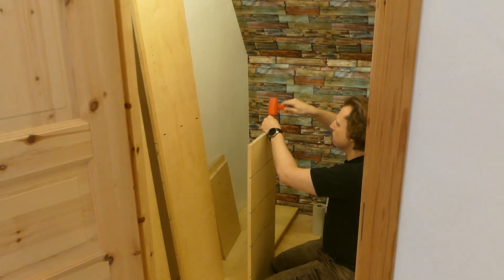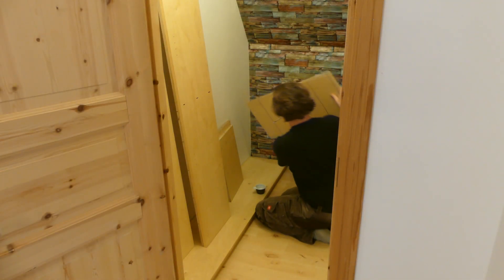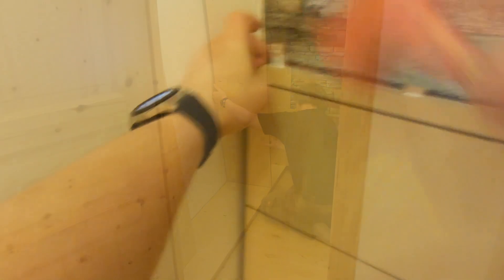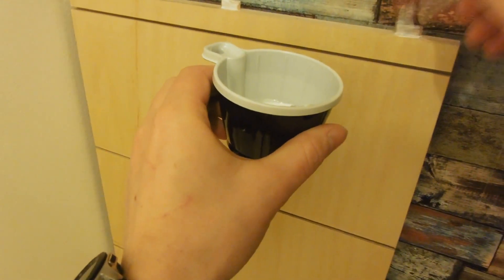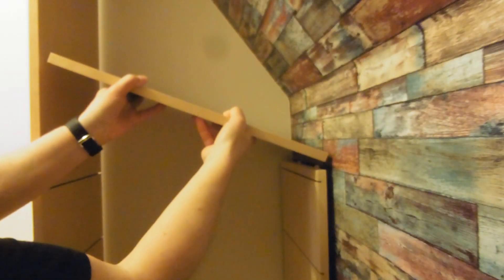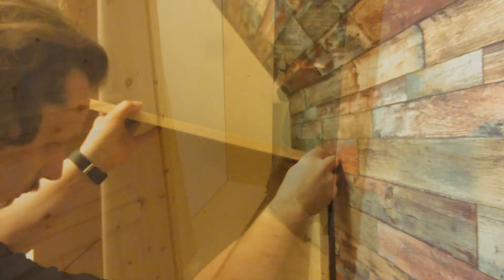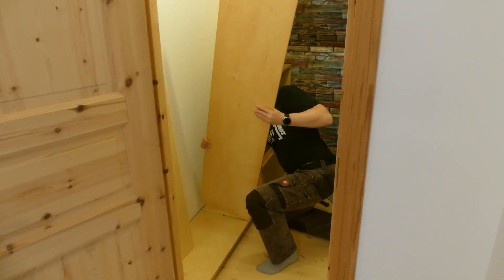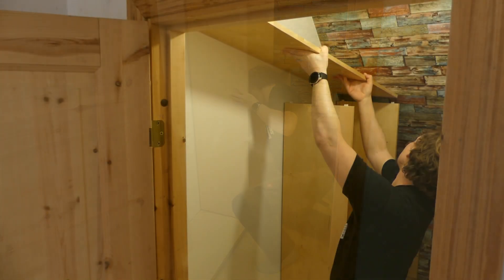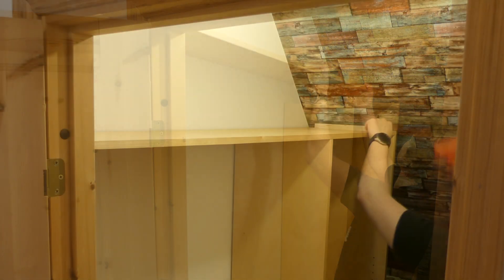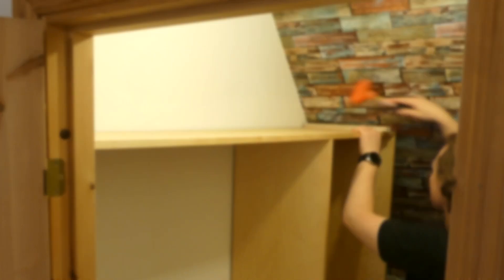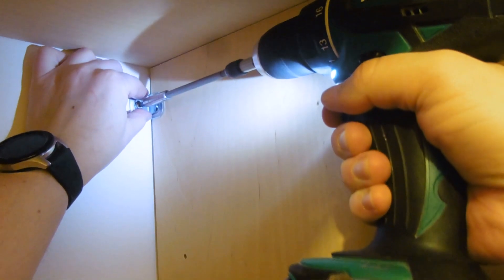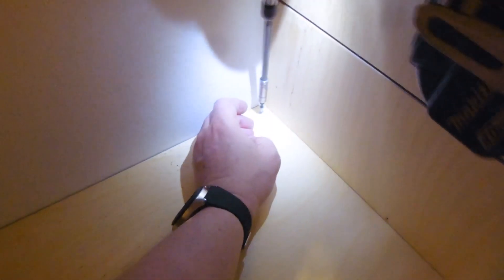With the bottom shelf and the brackets in place all the preparations for the assembly was made. Time for some glue and dominoes. And some tapping. When the top shelf was in place I used brackets to secure the carcass to the wall. And also some screws to fasten the bottom shelf.